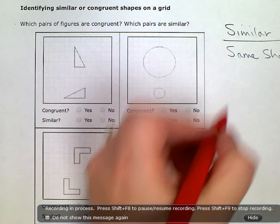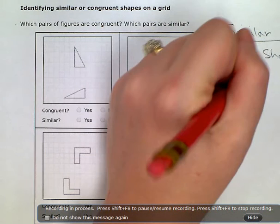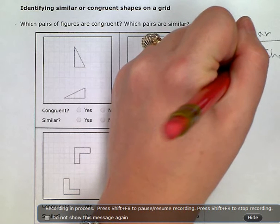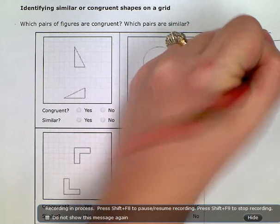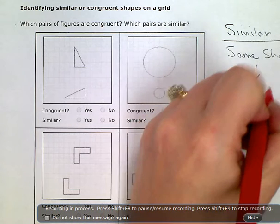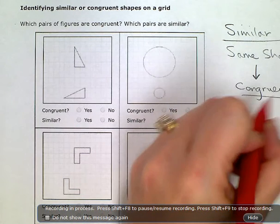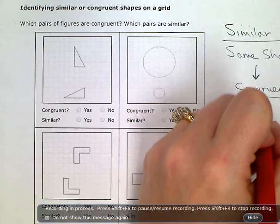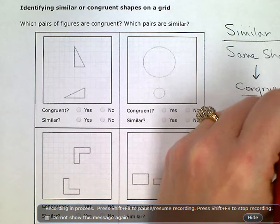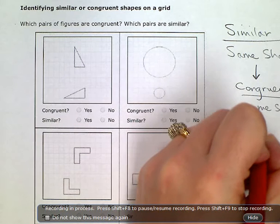And then, kind of underneath that, we have congruent. Congruent figures are the same shape and they're the same size.